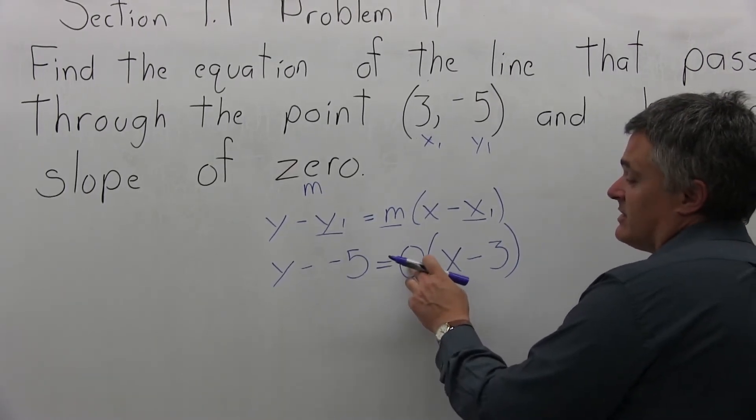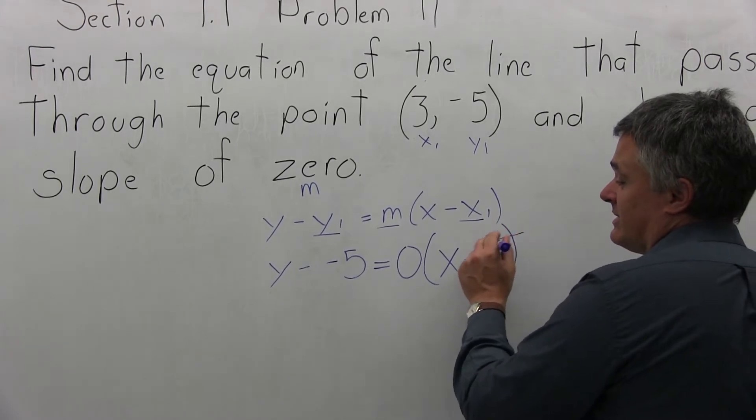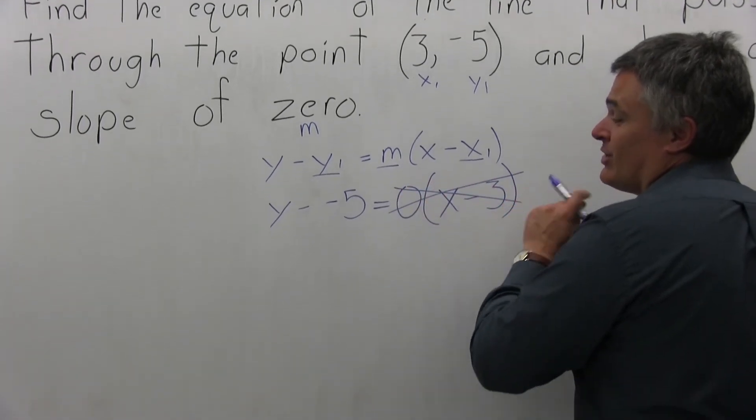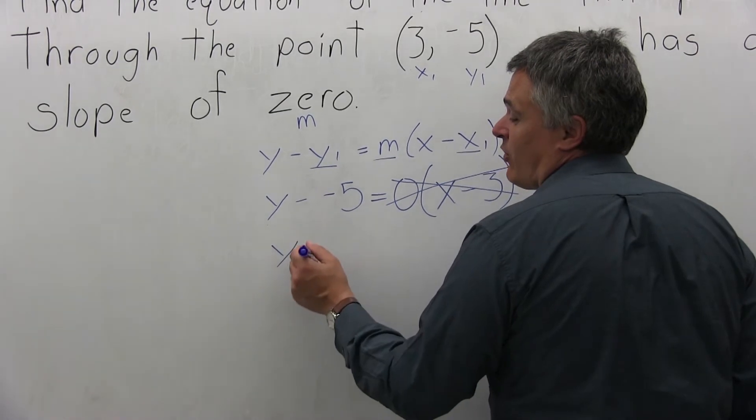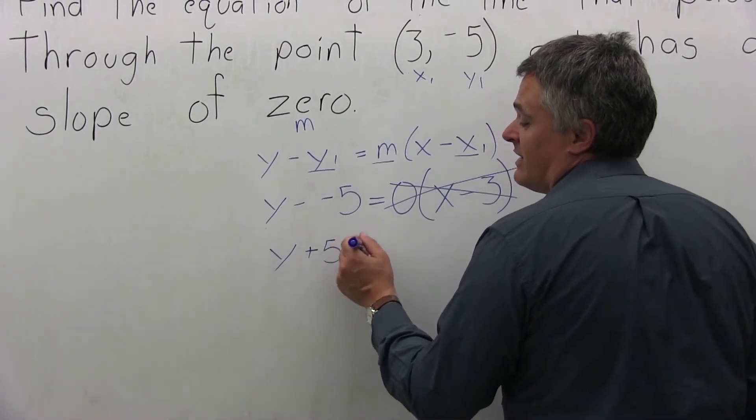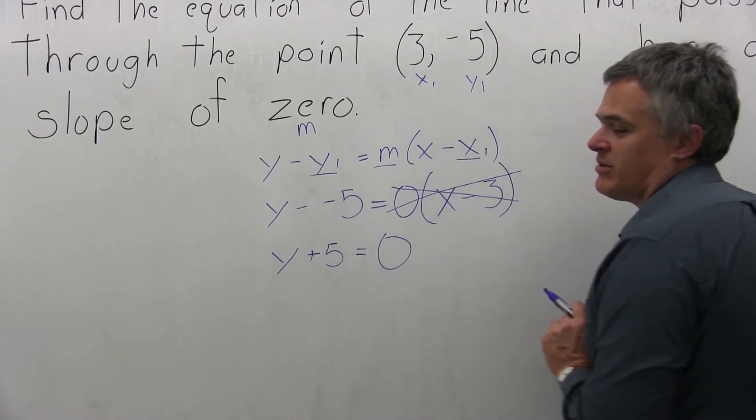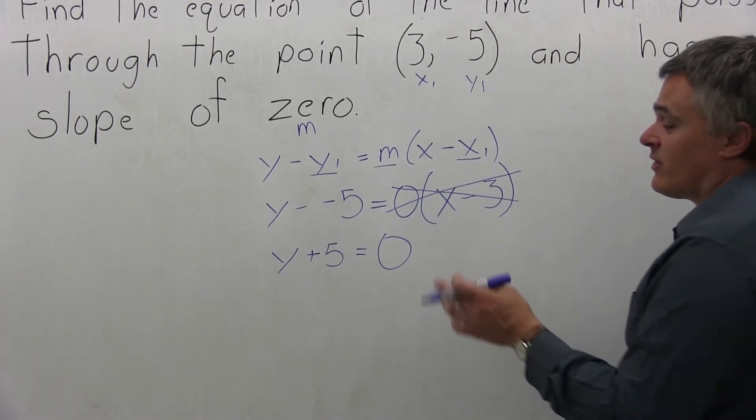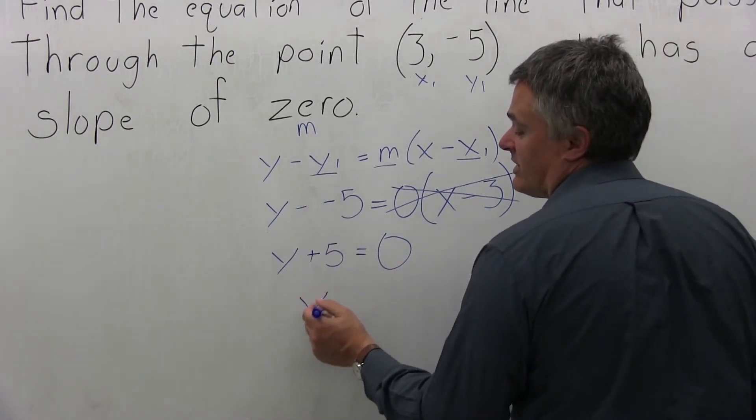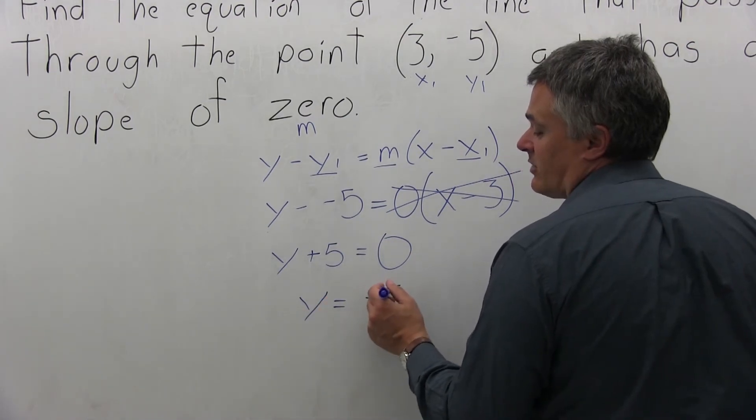What happens here is when you clear the parentheses, the 0 times the parentheses, the whole right half of the equation goes away. You have y plus 5 equals 0. That minus and minus 5, I change it to y plus 5. And to solve for y, you bring the 5 on the other side, you get y equals negative 5.